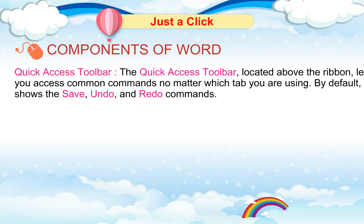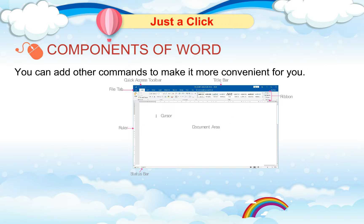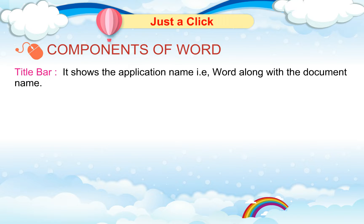Quick Access Toolbar: The Quick Access Toolbar is located above the ribbon and lets you access common commands no matter which tab you are using. By default, it shows the Save, Undo, and Redo commands. You can add other commands to make it more convenient for you. Title Bar: It shows the application name, i.e., Word, along with the document name.